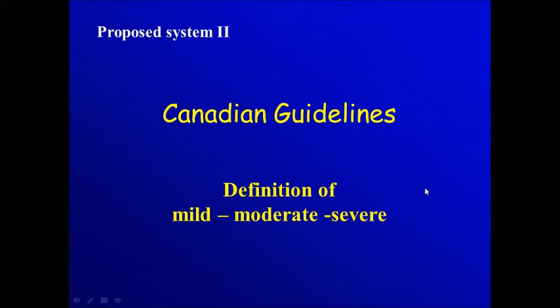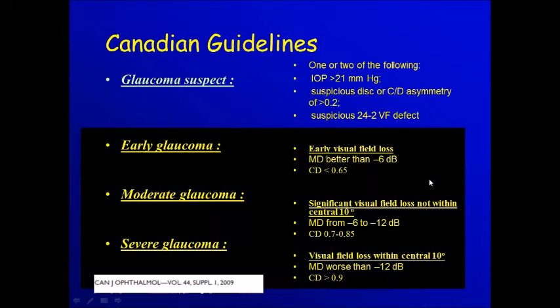The second system is the Canadian guidelines. They defined early glaucoma as cases with early field changes, with changes in the mean deviation less than six, with a cup-disc ratio less than 0.65.